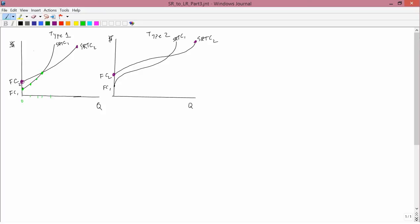This Q, the lowest cost is here, this one here, and this one here. So you have a combination. You follow SRTC1 for small Qs and then you switch over to SRTC2 for large Qs.